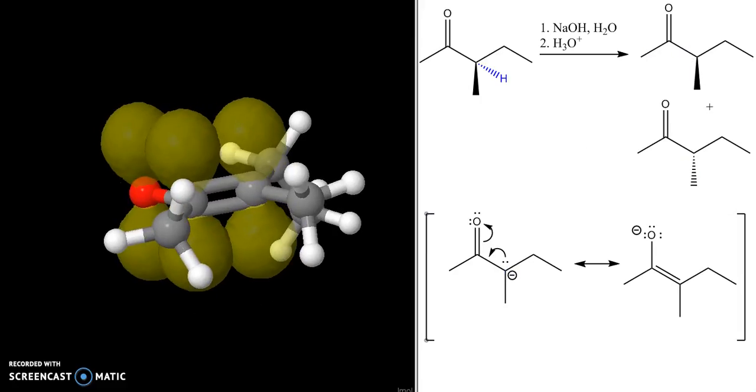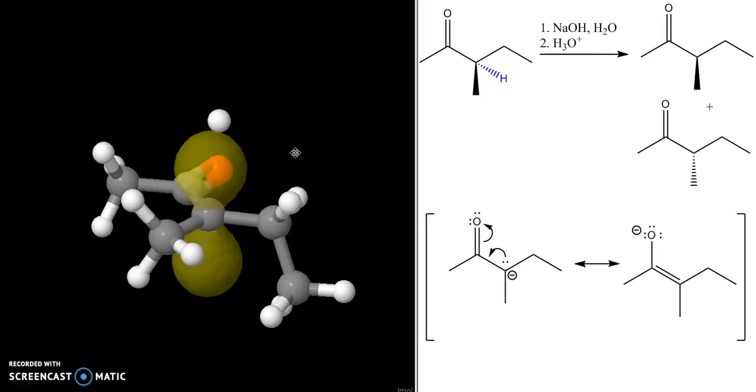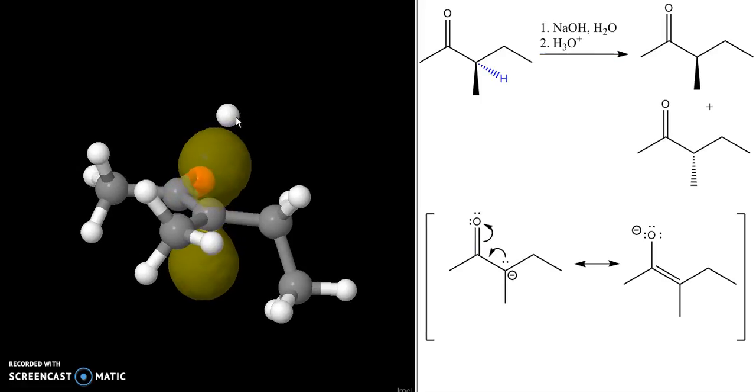What happens in the second step is when we add the acid, the H+ donated by this acid can come in to this anion from either the top face as shown here. The electron density is in this p orbital and the hydrogen is coming in from the top face.